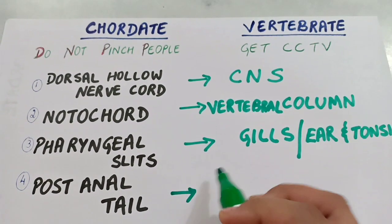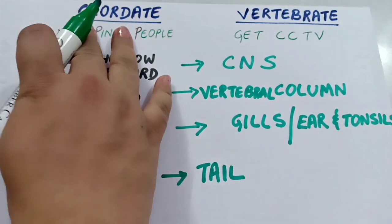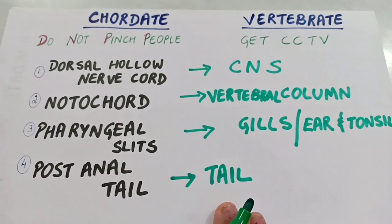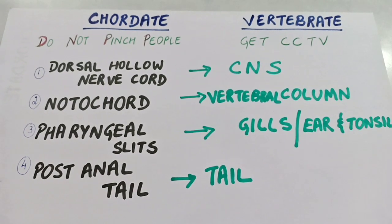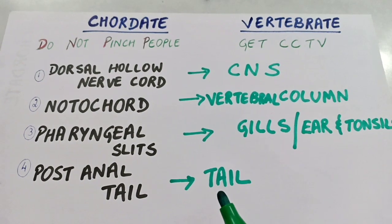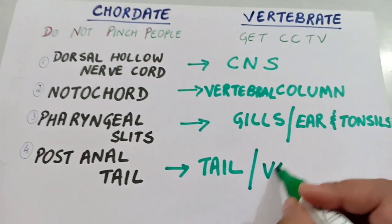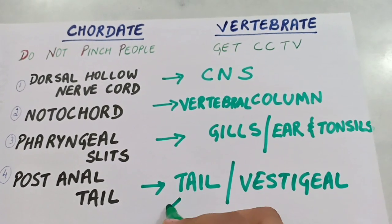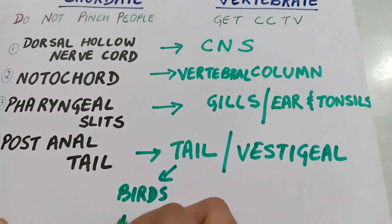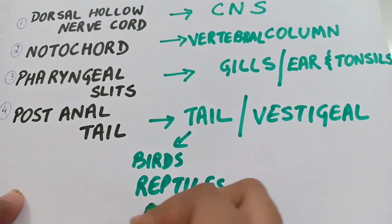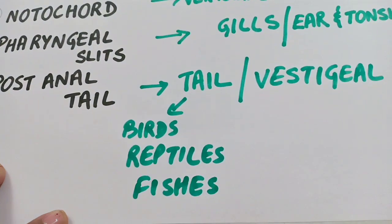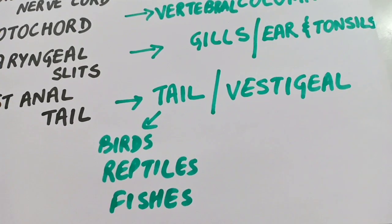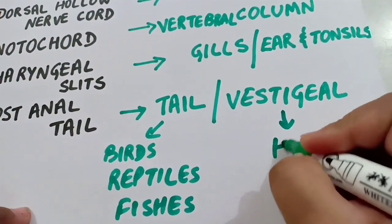Then T is for tail. The post anal tail present in chordates is also present in some vertebrates — for example in fishes, reptiles, and birds — where it is used for balancing, coating, or signaling. V stands for vestigial, meaning in humans the tail is reduced in size and non-functional.